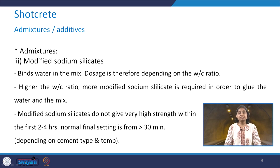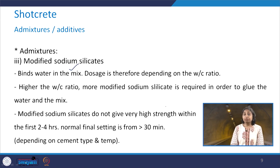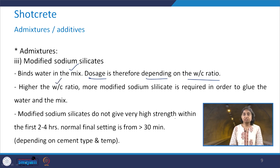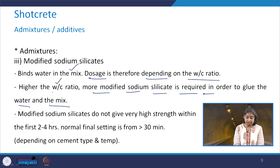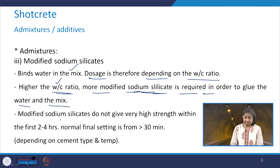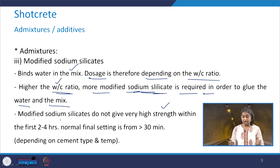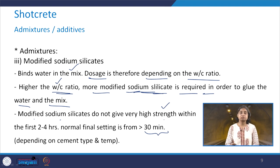The third category is modified sodium silicates. These bind the water in the mix, so the dosage depends on the water-cement ratio — the higher the water-cement ratio, the more modified sodium silicate is required to bind the water in the mix. Modified sodium silicates do not give very high strength within the first 2 to 4 hours, and their normal final setting time is more than 30 minutes, which also depends on the type of cement used and the temperature.